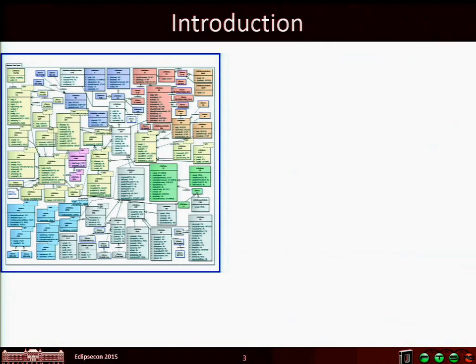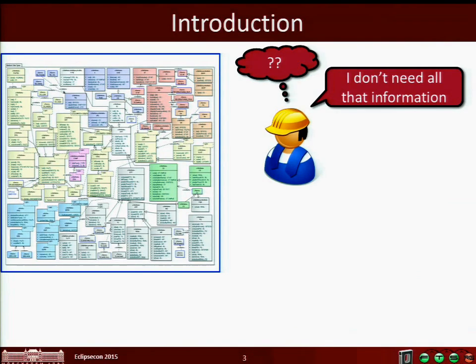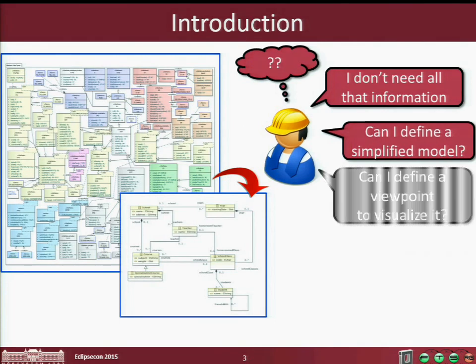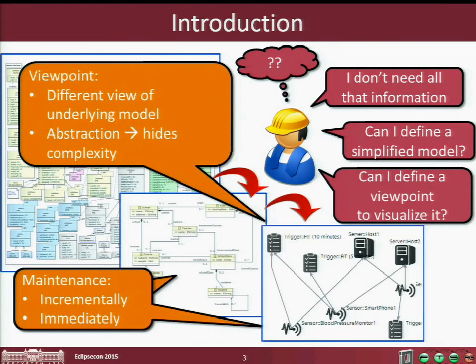The motivation is quite simple. Usually, the problem with model-driven development is that we can have models that are extremely large and complicated, where some users wouldn't want to go into the details and would like to have only a certain part of the model visualized for them in their editor. The question is, how can we do that? Is it possible to define some kind of viewpoint — to filter out some information, or maybe perform a more complex transformation to achieve a visualization that is more descriptive for the user and hides underlying complexity?